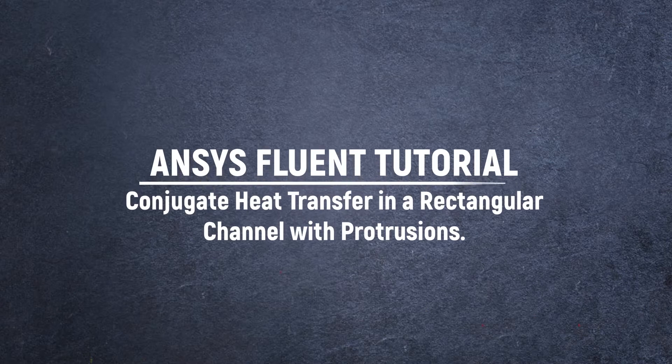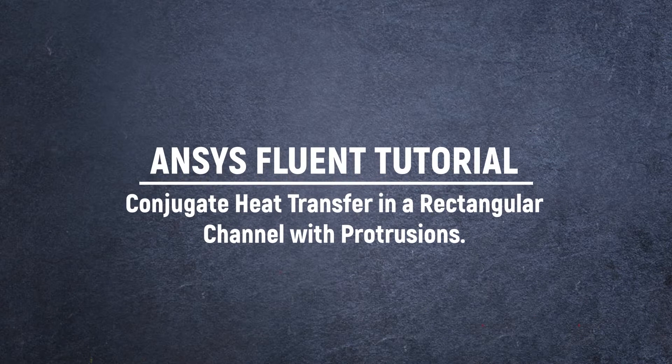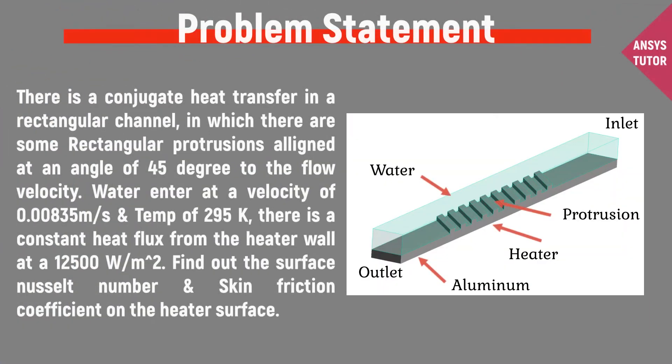In this video we will demonstrate a conjugate heat transfer simulation in a channel with protrusions. There is a rectangular channel with protrusions aligned at an angle of 45 degrees to the flow velocity. Water enters at a velocity of 0.00835 meters per second and a temperature of 295 Kelvin. There is a constant heat flux from the heater wall at 12,500 watts per meter square.